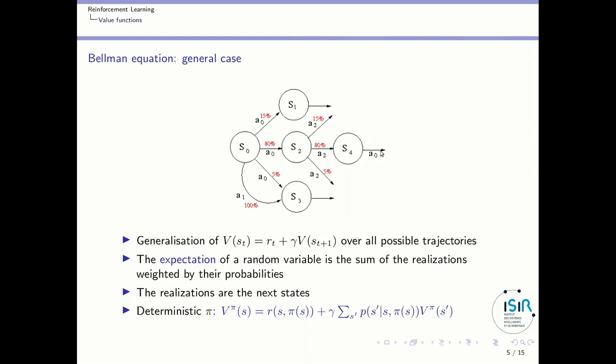Now, let's consider a full MDP — an agent that follows many different trajectories. To generalize this formula to all potential trajectories, we have to consider the expectation of following the different trajectories. The expectation of a random variable is the sum of the realizations weighted by their probabilities. The different realizations are the potential next states, which may depend on stochastic probability of transitions between the state and the next state given a particular action.